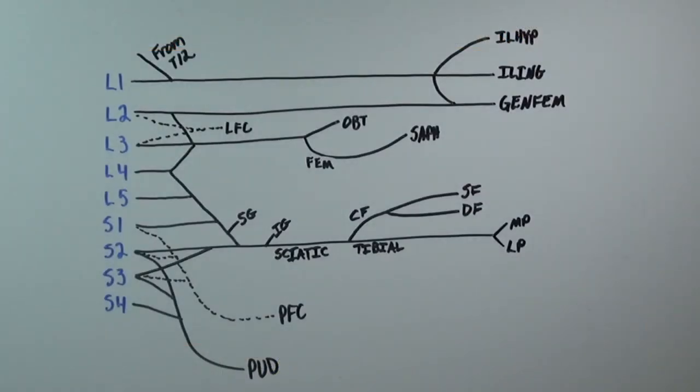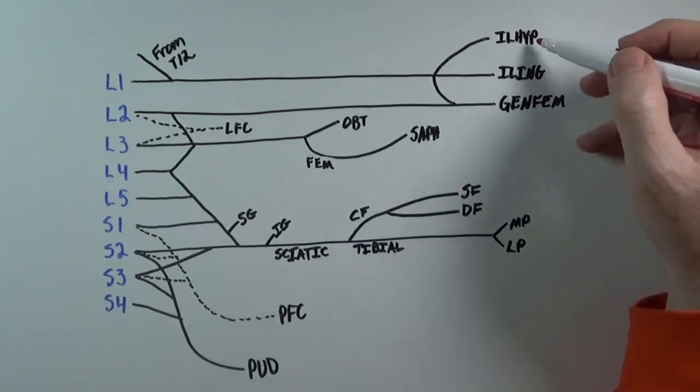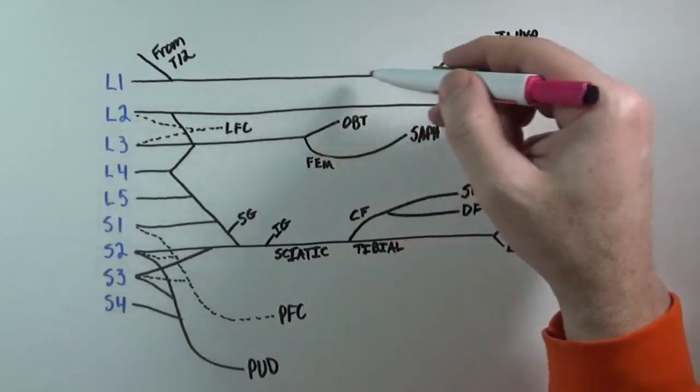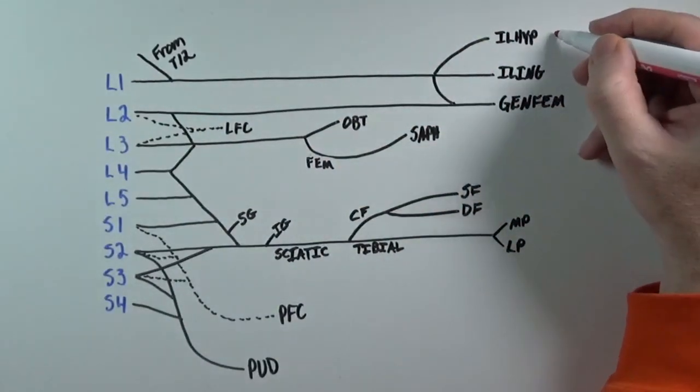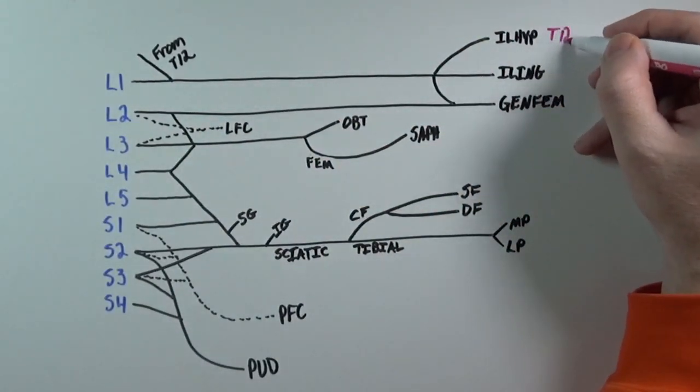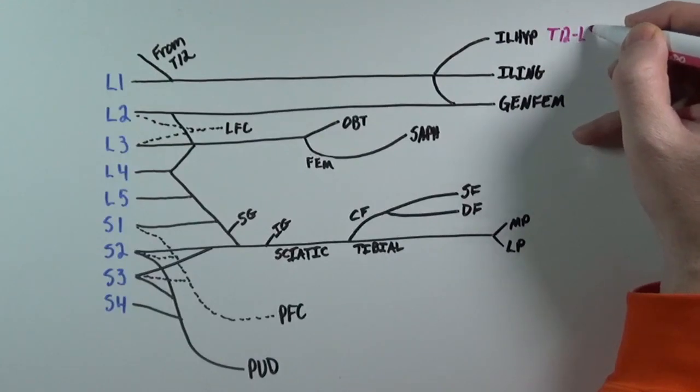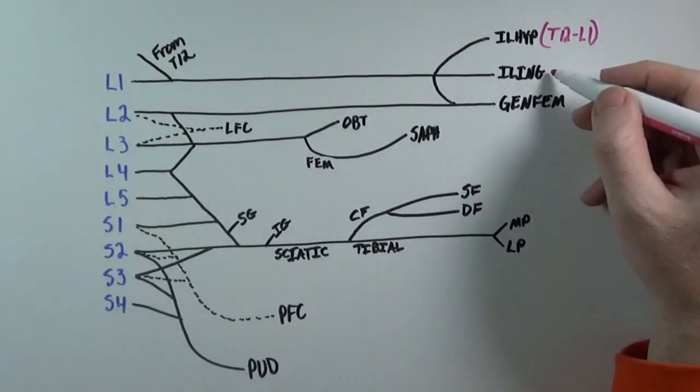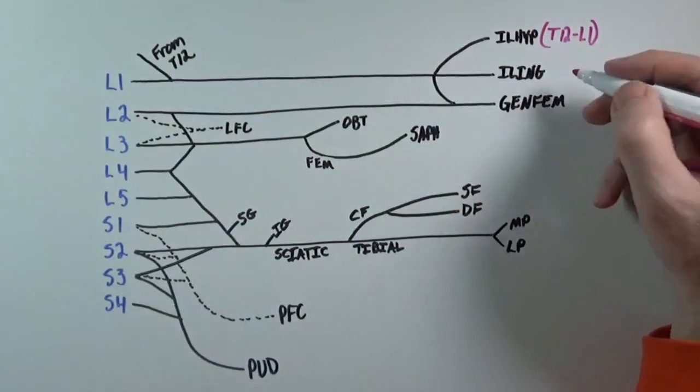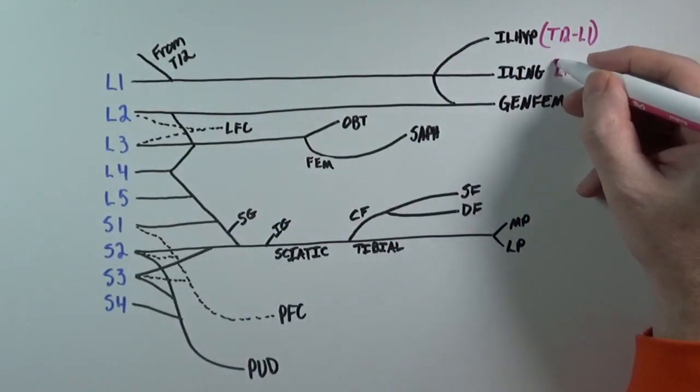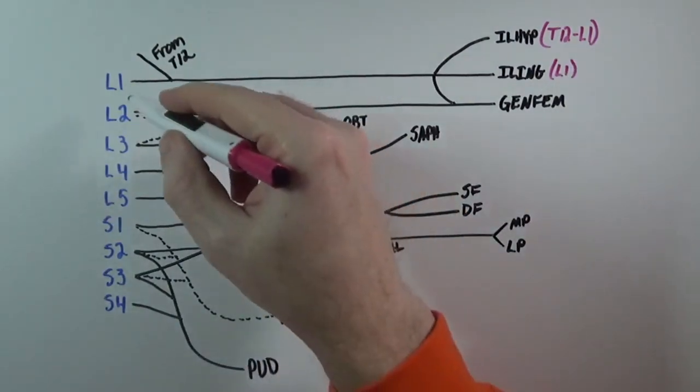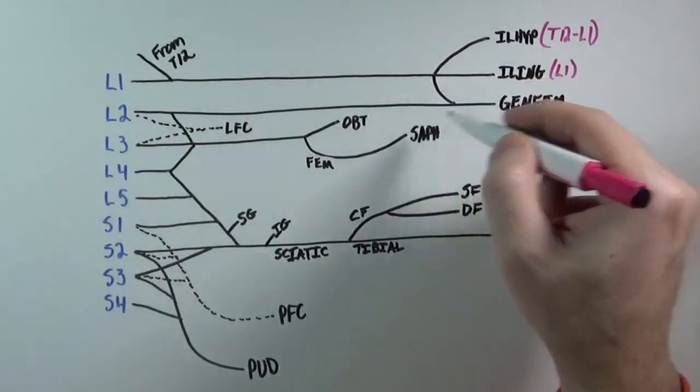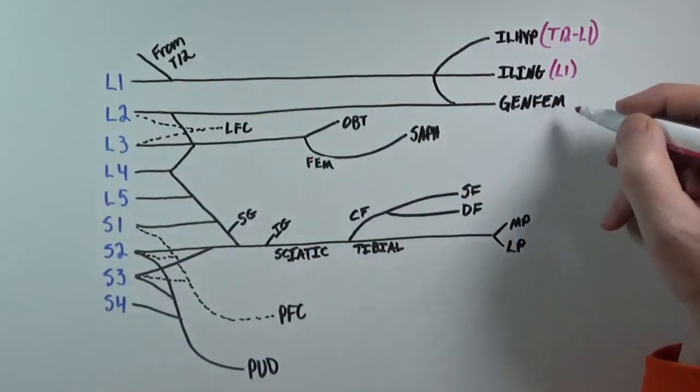If you're required to know the nerve root levels, you can use this picture to help you remember the levels for each nerve. This first nerve, the iliohypogastric nerve, you can see it originates from T12 and L1. This nerve, the ilioinguinal nerve, comes straight from L1. If we trace L1 to where it hooks up with L2, we have the genitofemoral nerve.